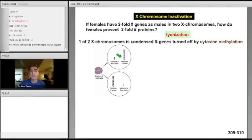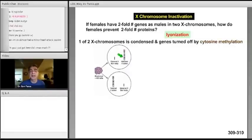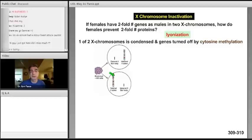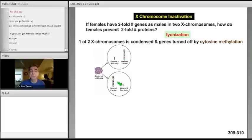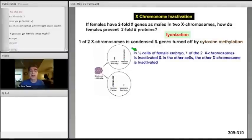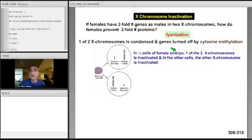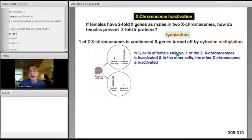But in the other 50% of the cells, it's just the reverse. The X chromosome that comes from the father is alive, whereas the X chromosome that comes from the mother is lyonized all the way down to the bar body and completely shut down. So the idea is in one half of the cells of a female embryo, one of the two X chromosomes is inactivated by cytosine methylation in the process called lyonization, and in the other half of the cells, it's the other X chromosome that is inactivated.